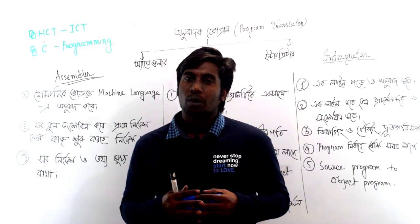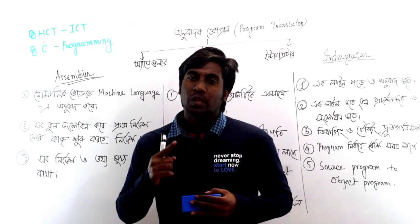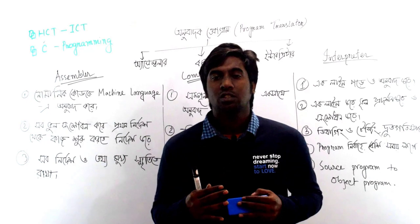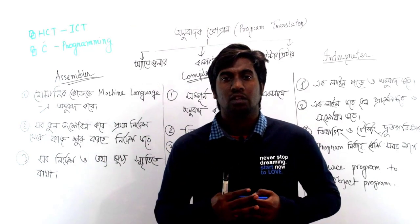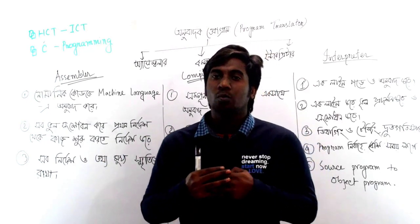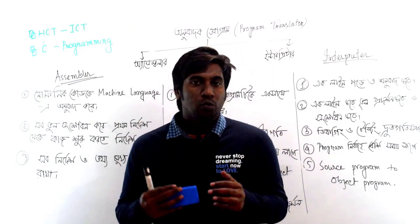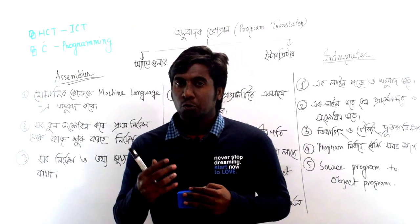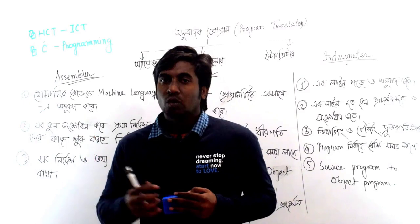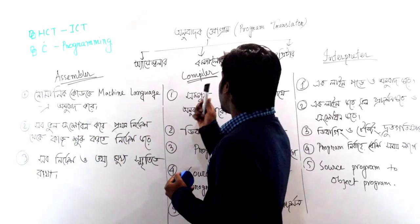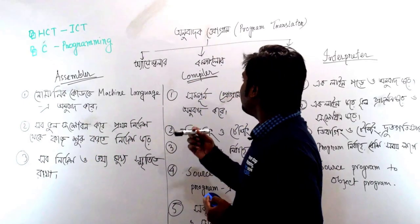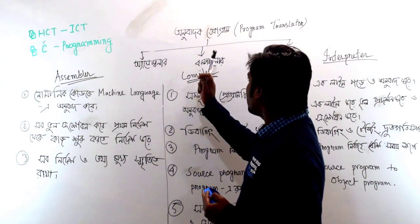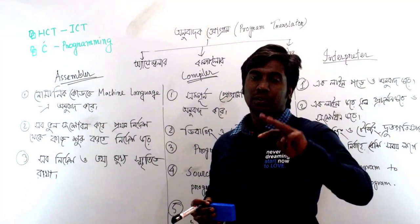The computer uses a machine language. Machine language is a binary language — it uses 0s and 1s. The source program becomes an object program. The assembler is a program, and there are three parts: assembler, compiler, and interpreter.